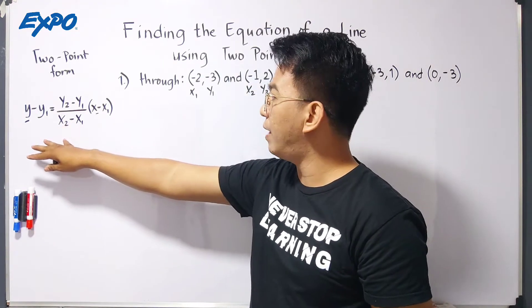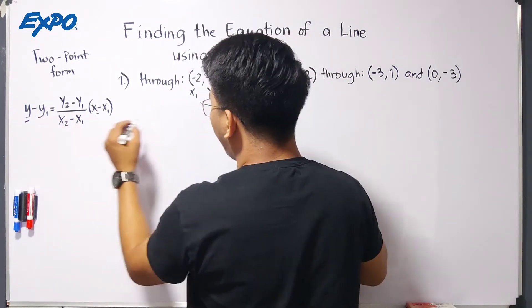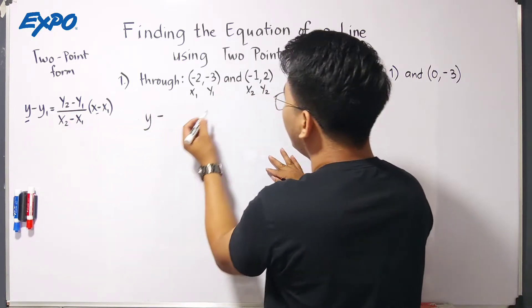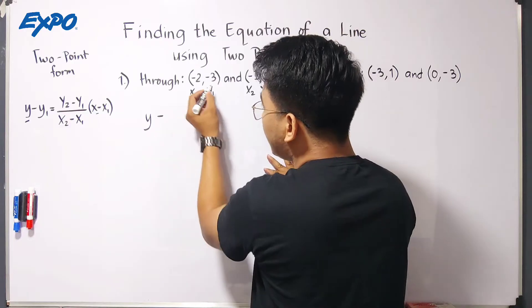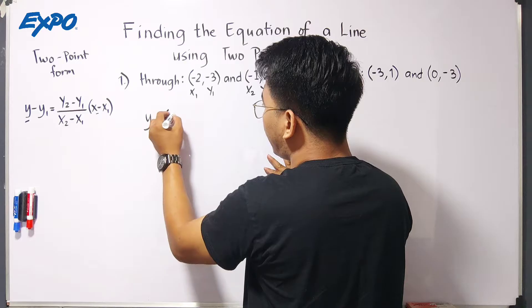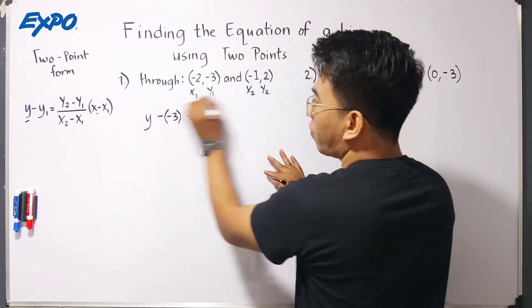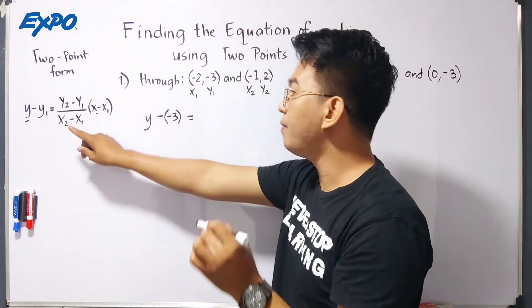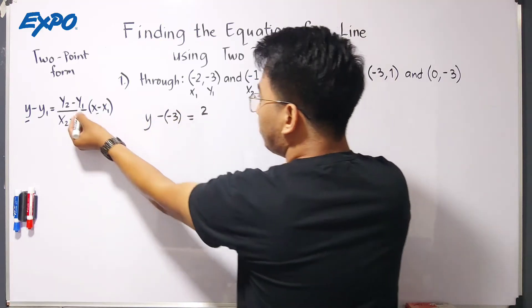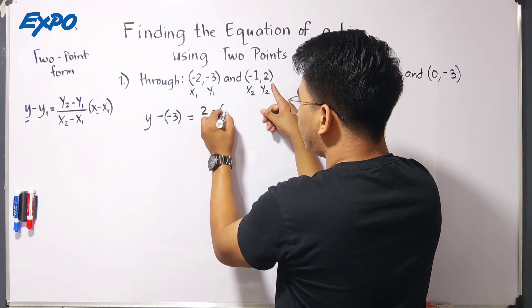What we'll do is use this formula. We will substitute y sub 1 here. We have y minus your y sub 1, which is negative 3. Since this is negative, we'll use parenthesis, which is negative 3, equals y sub 2. Your y sub 2 here, please follow the formula. Your y sub 2 equals 2, minus your y sub 1, which is negative 3.